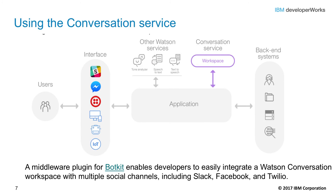Here is an example framework for an application built using the Conversation Service. Users can interact with the application from many channels, including messaging applications, Slack, and web or mobile platforms. The application takes input, which may be analyzed or converted with the help of other Watson services, and sends it to a workspace in the Conversation Service, which includes defined intents, entities, and dialogue flow. Depending on the dialogue path, the application can call out to other backend systems to perform actions on behalf of the user, or to retrieve information to be used in responses to the user. Tools exist to make this a low-to-no programming-required exercise for many chatbot and messaging scenarios.